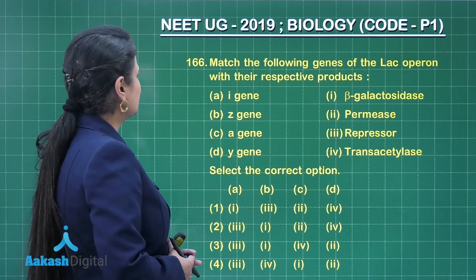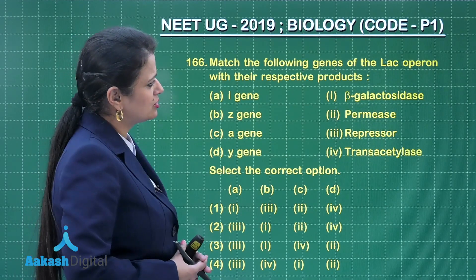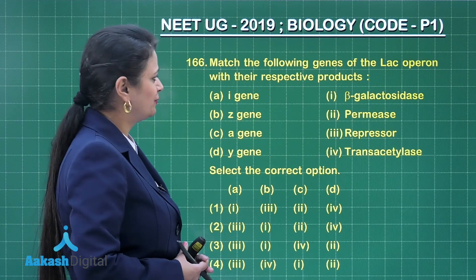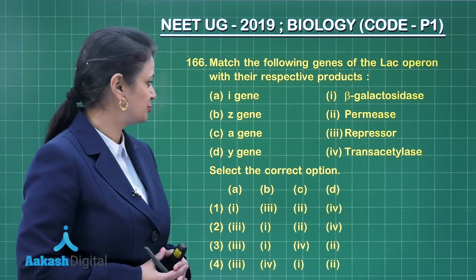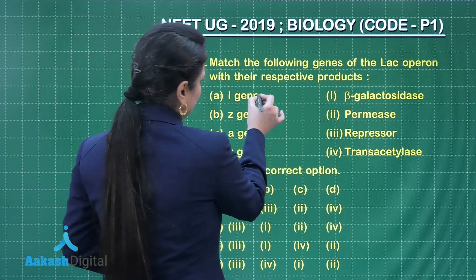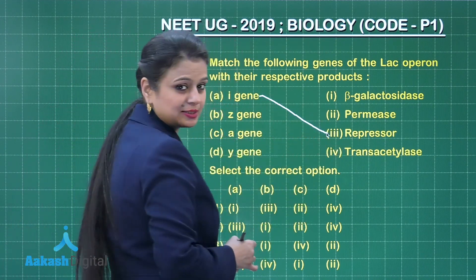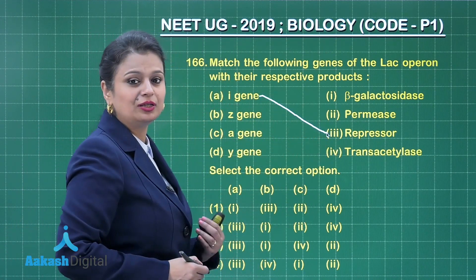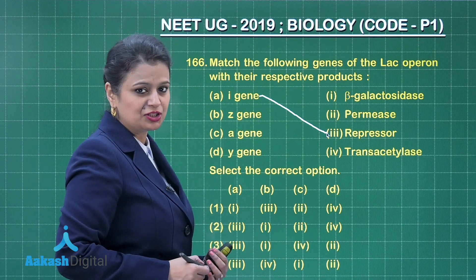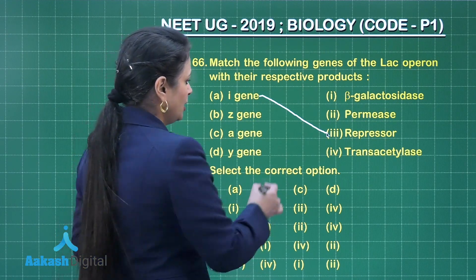Question number 166. Match the following genes of the lac operon with their respective products. The I gene is involved in the synthesis of the repressor. I gene is the inhibitor gene which forms the repressor.